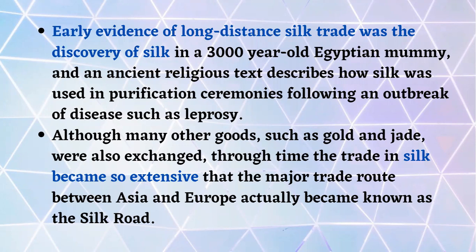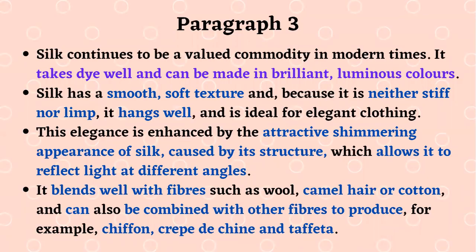Early evidence of long-distance silk trade was the discovery of silk in a 3,000-year-old Egyptian mummy. An ancient religious text describes how silk was used in purification ceremonies following an outbreak of disease such as leprosy. Although many other goods such as gold and jade were also exchanged, the trade in silk became so extensive that the major trade route between Asia and Europe became known as the Silk Road.